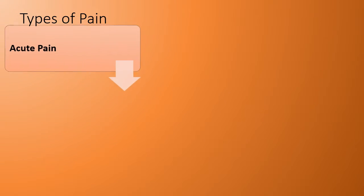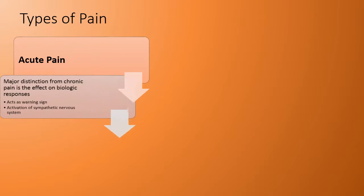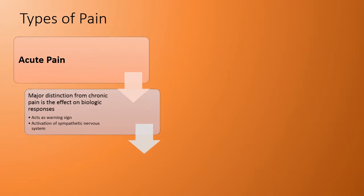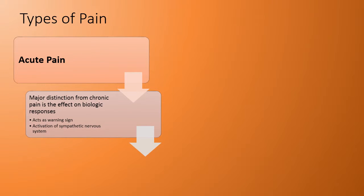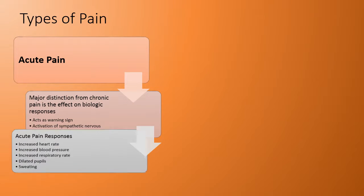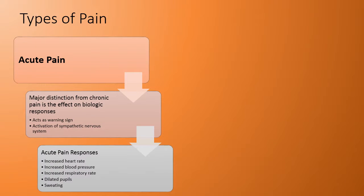There are two different types of pain. Acute pain acts as a warning sign with activation of the sympathetic nervous system. Acute pain responses include increased heart rate, increased blood pressure, increased respiratory rate, dilated pupils, and sweating.